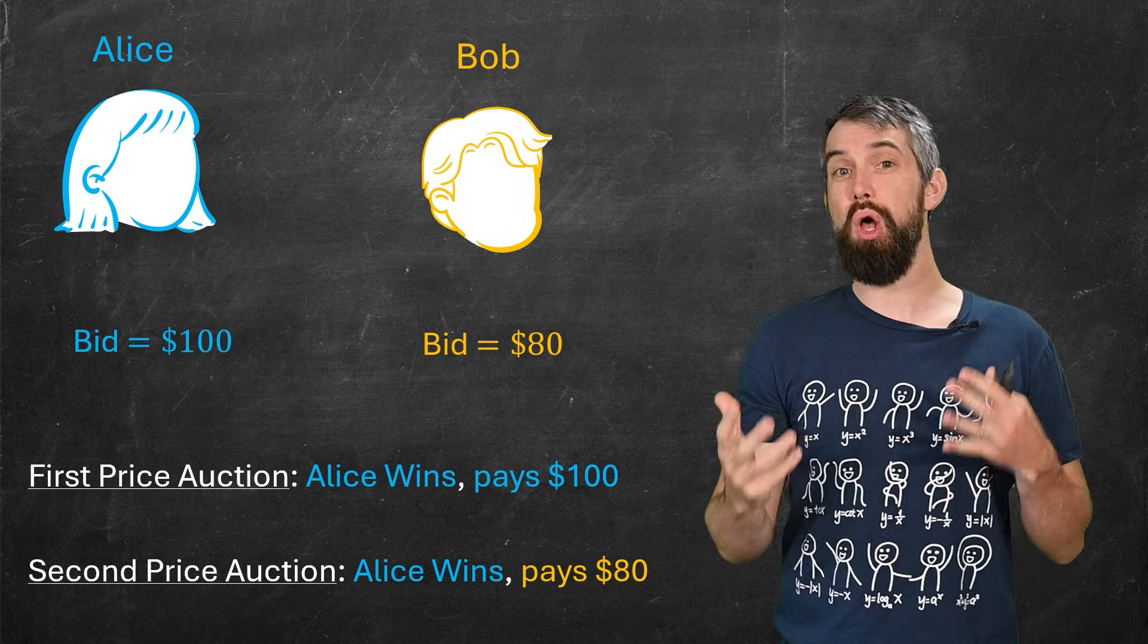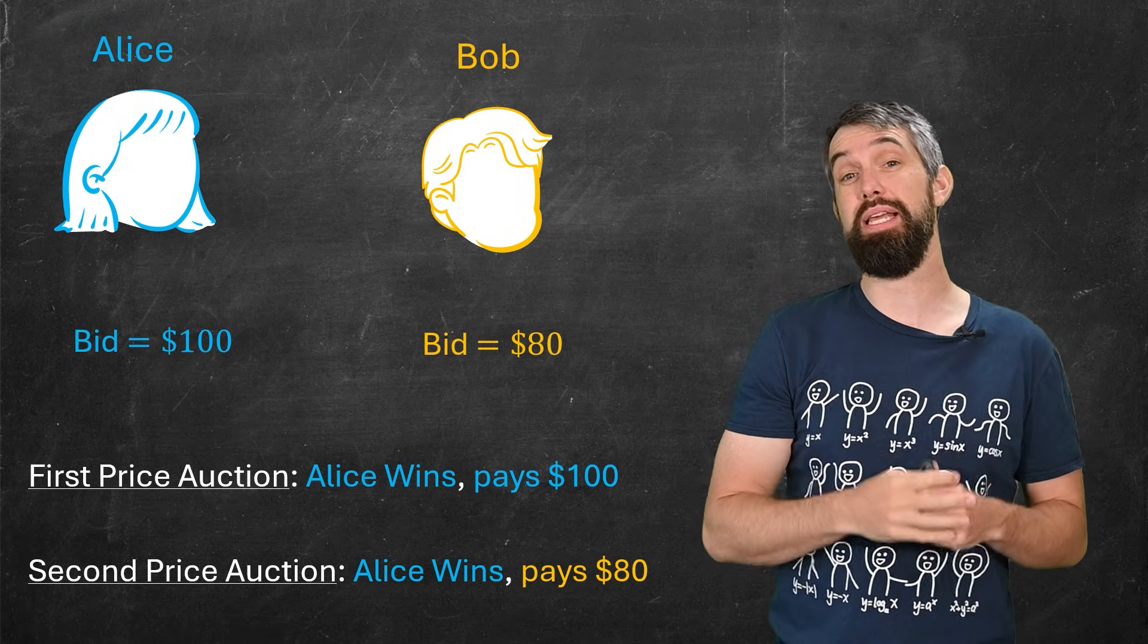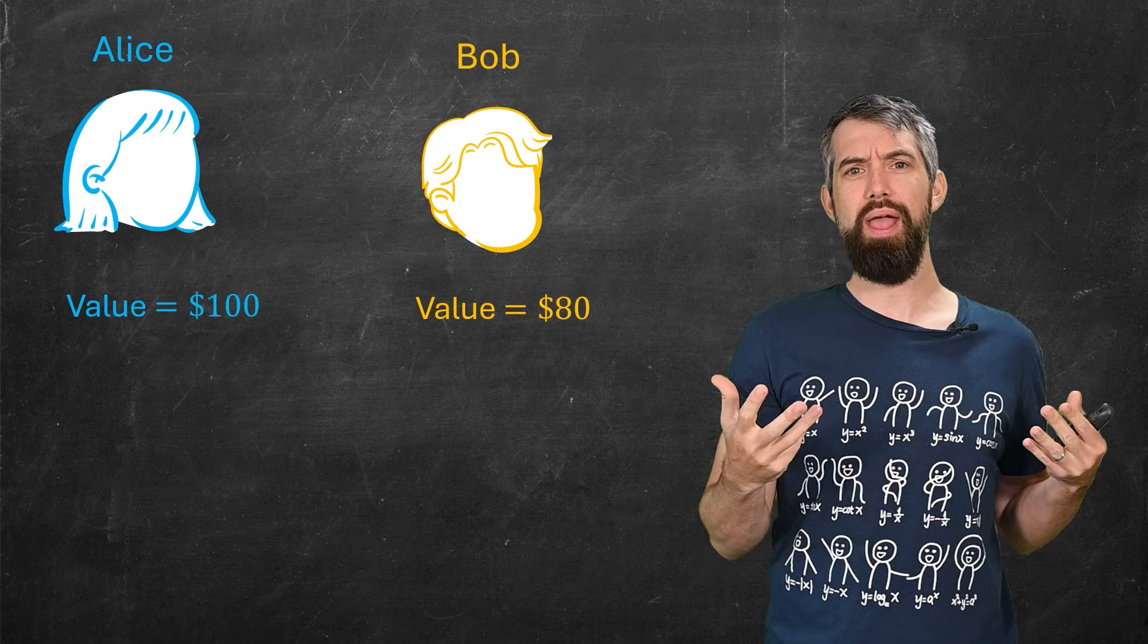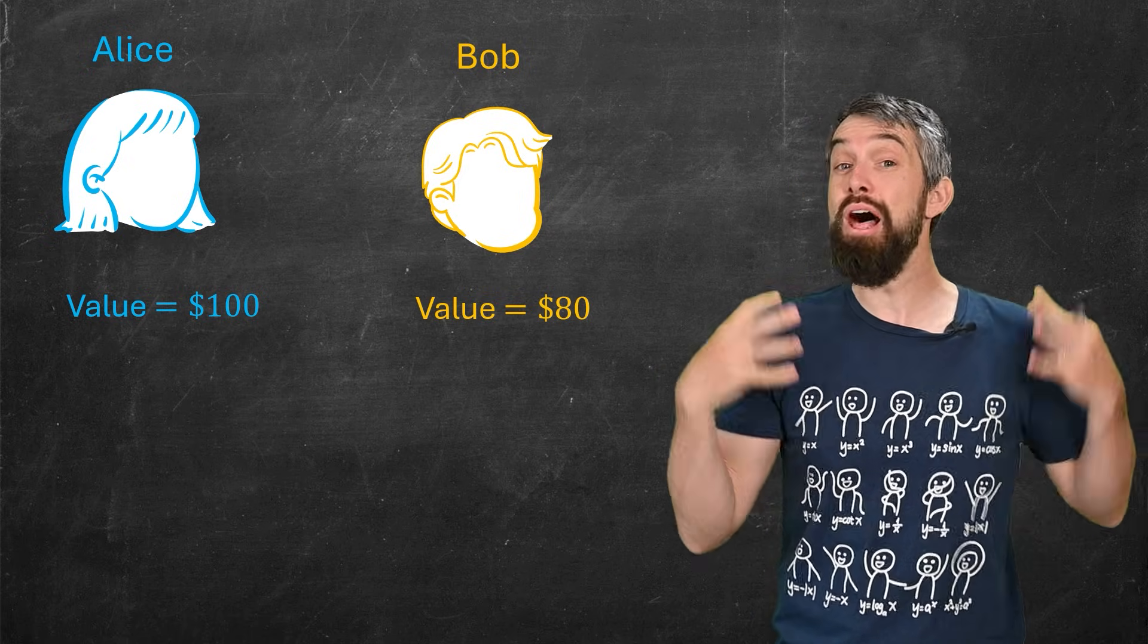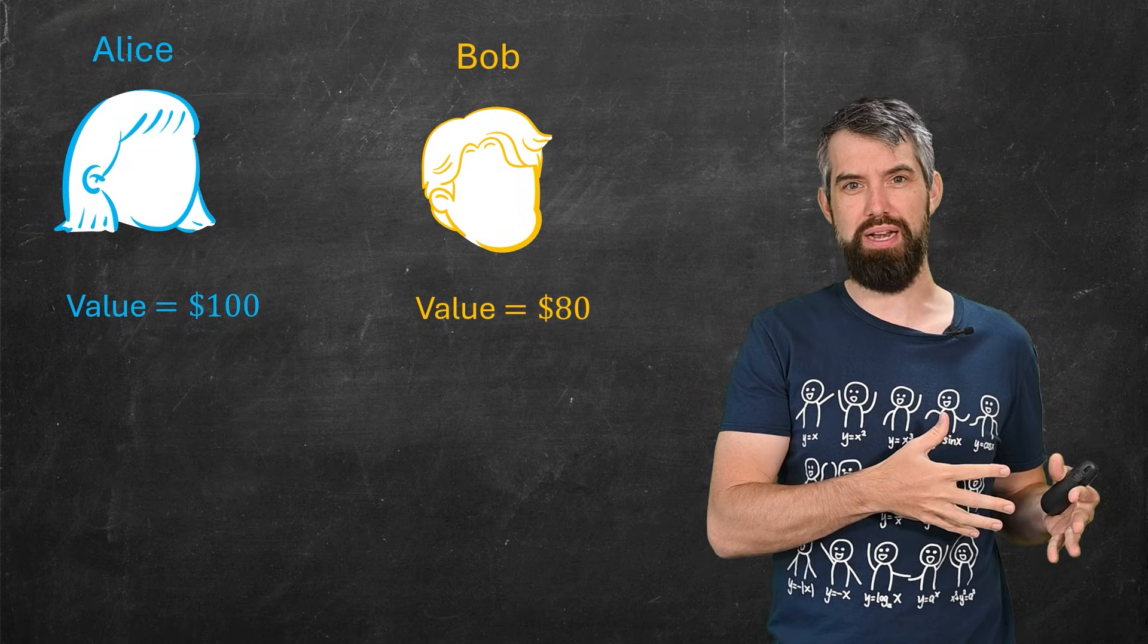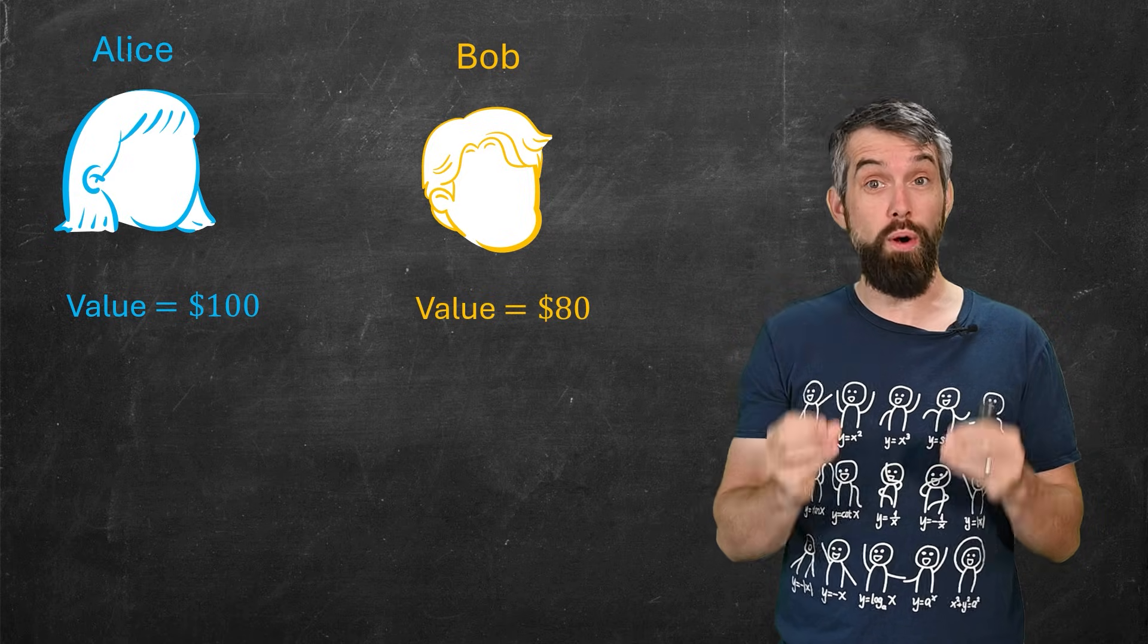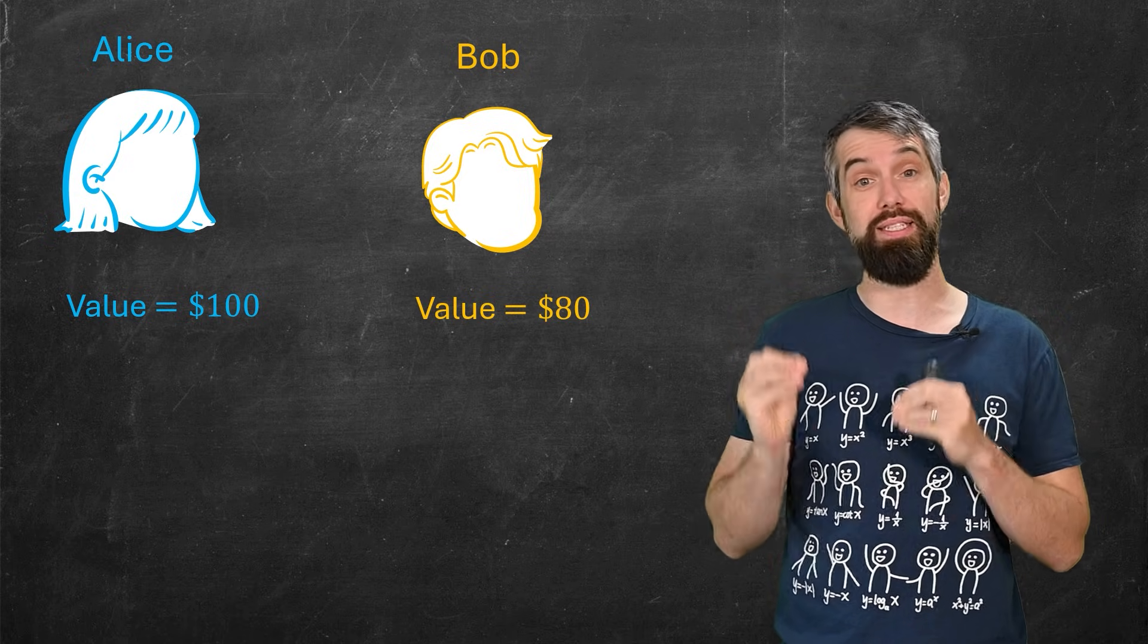So why would a second price auction be nice? I mean, superficially, it seems like it's less money. But what I really want you to think is that Alice and Bob have an internal valuation now of $100 and $80 respectively. This means they think the thing they are buying is worth this. That's their honest and truthful assessment of it.